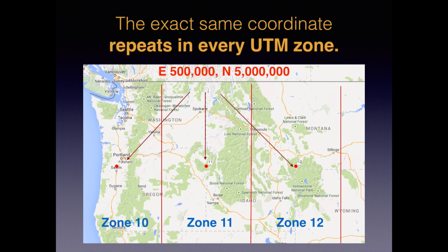This shows why it can be important to specify what zone you're in. Here we have the exact same coordinate — easting 500,000, northing 5 million — and this one coordinate plots in three very different places in zones 10, 11, and 12. This actually repeats all around the world, so any easting and northing coordinate pair could be in any one of 60 different zones. So if you're communicating your UTM coordinates to someone and there's even a tiny uncertainty about what zone you're in, it's best practice to specify it.